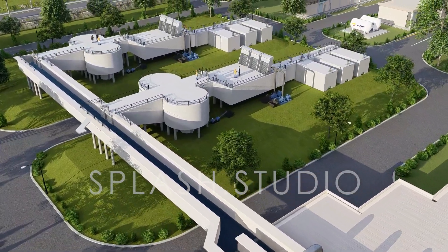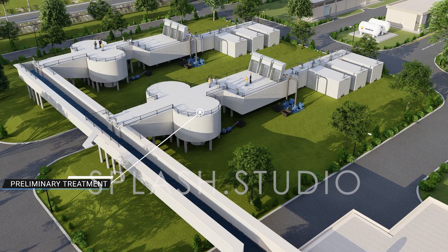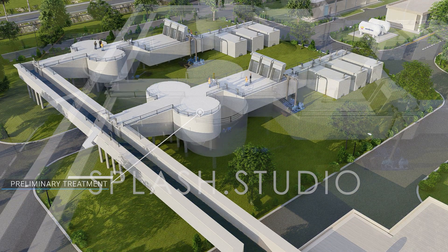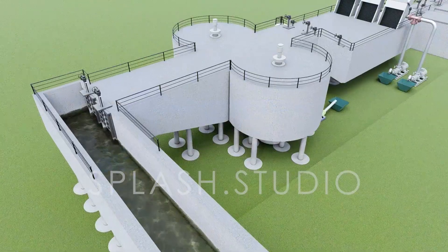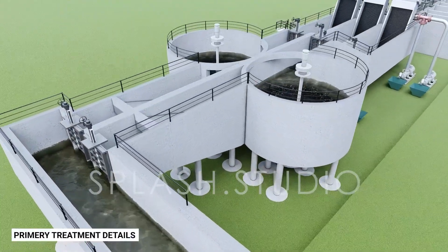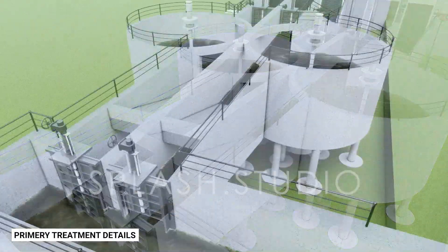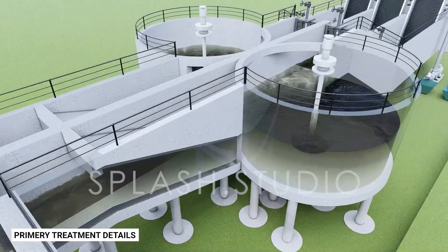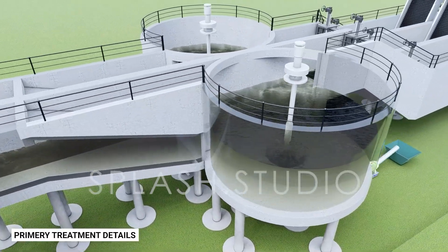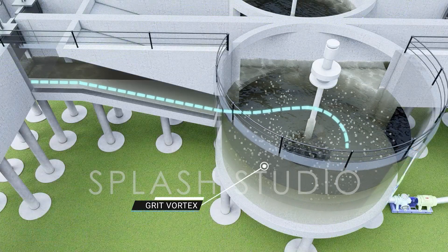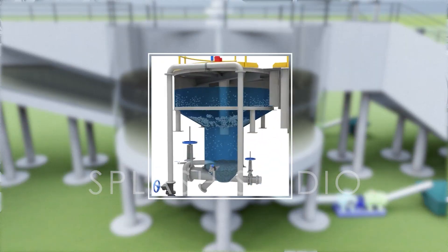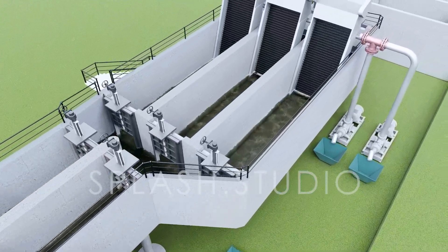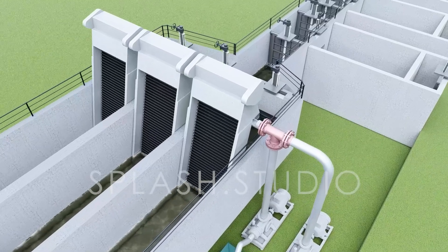The next step is the preliminary treatment where the water will be bypassed. Here, water will move to the grit vortex and grit will sediment as sludge. This sludge will then be moved to the sludge treatment area and water will be bypassed to the next screening area to filter out microparticles using a fine screen.